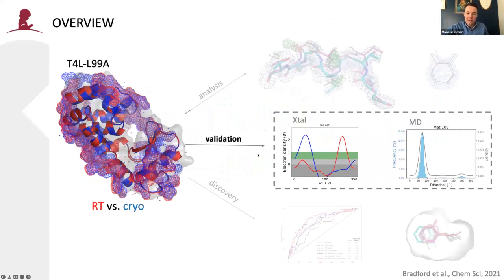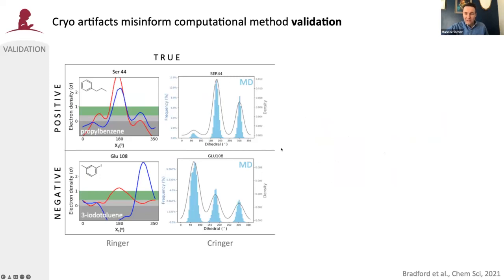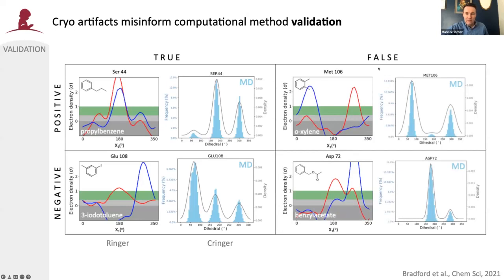That leads me to the second part: validation of computational methods. When validating computational predictions, it's typically assumed that experimental results are accurate, so all comparisons of computational to experimental results lead to true positives or true negatives used to assess computational performance. We were now interested in looking at the other half of this — the false positives and false negatives. False positives mean you think you're right but are actually wrong; false negatives mean you think you're wrong but are actually right — successes mistaken for failures.